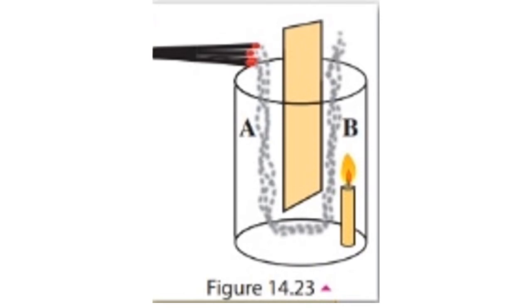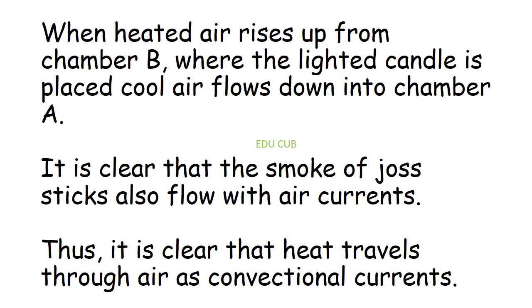Observe what happens, then blow out the candle and hold the joysticks inside chamber A and observe what happens. It can be observed that the smoke of joysticks enters the beaker from side A and comes out from side B. When heated air rises up from chamber B where the lighted candle is placed, cold air flows down into chamber A. The smoke of the joysticks flows with the air currents. It is clear that heat travels through air as convection currents.